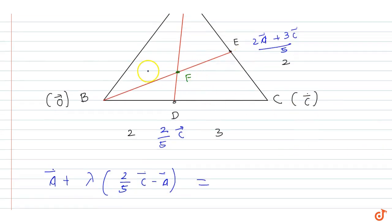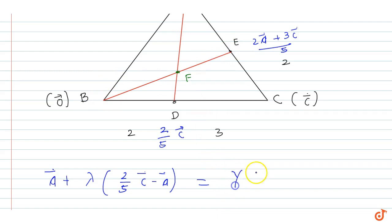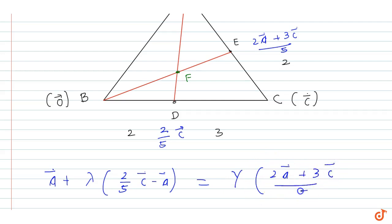For line BE, if BE divides in gamma:1 ratio, then BF = gamma times BE vector. And BE vector is (2A vector + 3C vector) / 5.